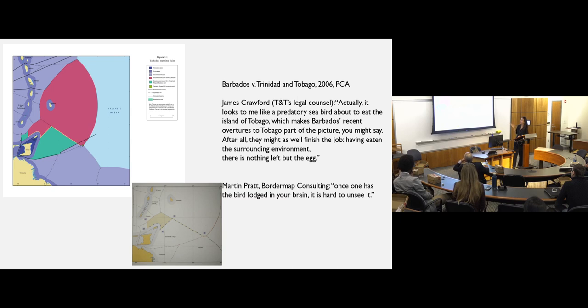So he presents the map to James Crawford, who represents the thing, those two islands, Trinidad and Tobago, and says, I apologize for the colors. They're so dramatic. And James Crawford says, no, these are actually perfect. And listen to what he said in front of arbitration tribunal. Actually, it looks to me like a predatory seabird about to eat the island of Tobago, which makes Barbados' recent overtures to Tobago part of the picture, you may say. After all, they might as well finish the job. Having eaten the surrounding environment, there is nothing left but the egg. Do you see the strategy here?